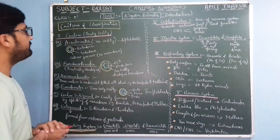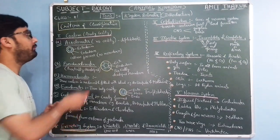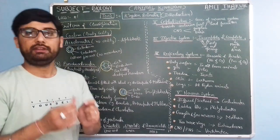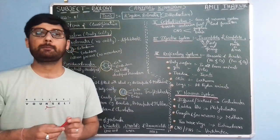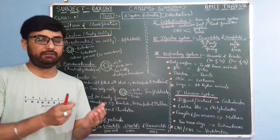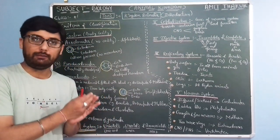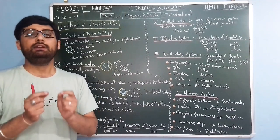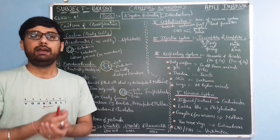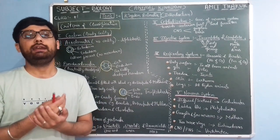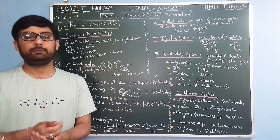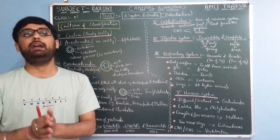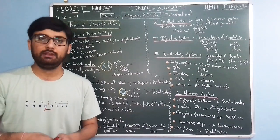In the previous lecture we were discussing about coelom. Coelom is actually a body cavity, and on the basis of the presence of body cavity or coelom we classify animals as acoelomates, pseudocoelomates, and coelomate animals.